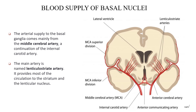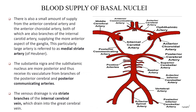The blood supply of the basal ganglia mainly comprises the middle cerebral artery, with the primary artery being the lenticulostriate artery, which provides most circulation to the striatum and lenticular nucleus. Additional supply comes from the anterior cerebral artery and the anterior choroidal artery — both branches of the internal carotid artery — supplying the more anterior aspect of the ganglia. The medial striate artery of Heubner also contributes. The substantia nigra and subthalamic nuclei receive arterial supply from the posterior communicating arteries, and venous drainage is via the striate branches of the internal cerebral vein.